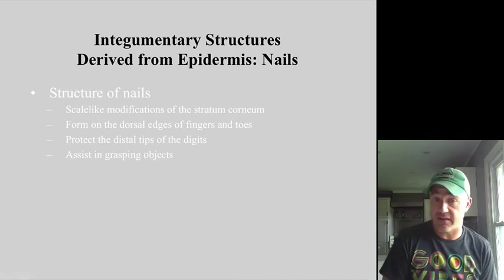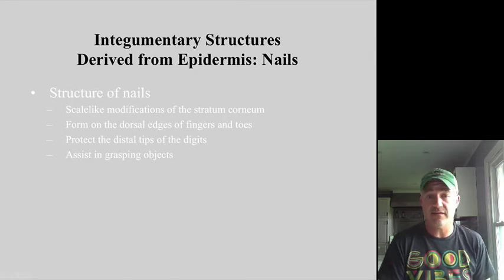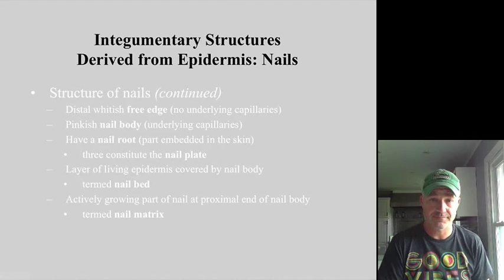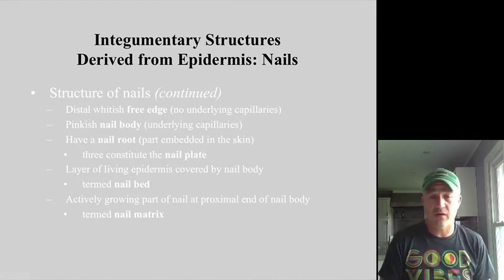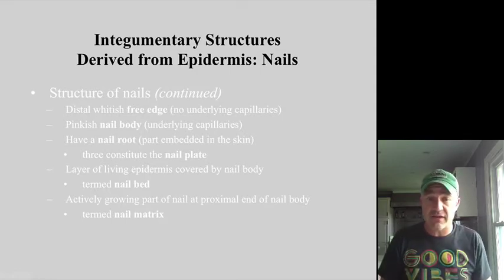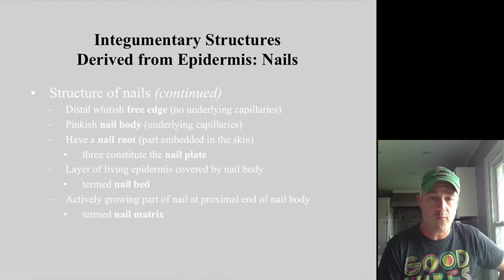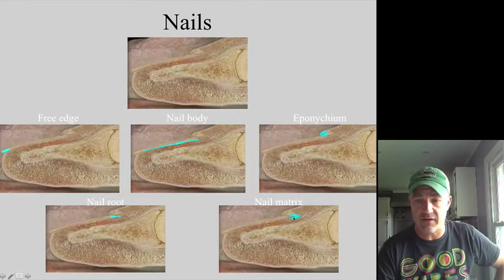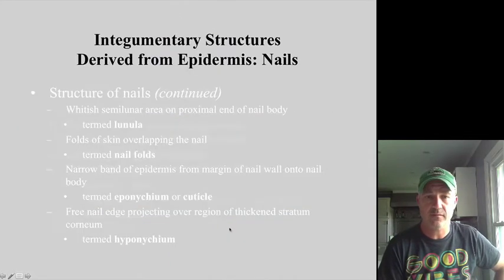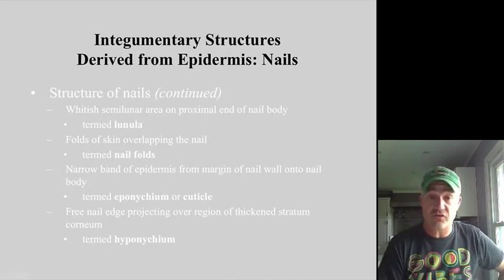Nails are a lot like hair — a slightly different type of keratin — and they protect the ends of our fingertips, assist in grasping things, and provide protection. The actively growing part is near the base of the nail, called the nail matrix, much like the hair matrix. It is that growing and dividing that pushes new cells outward, allowing the nails to get longer. The cuticle is the skin that covers the edge of the nails.